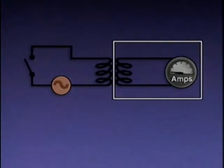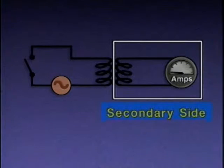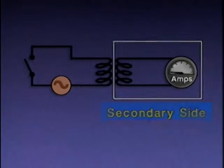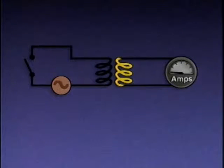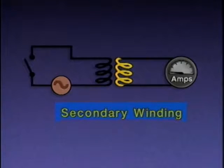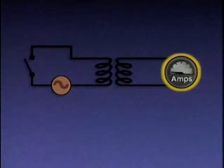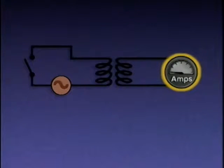The other side of the circuit is called the secondary side. The secondary side components handle power leaving the transformer. In this circuit, the secondary side includes the other coil of the transformer, which is called the secondary winding, and a load, which in this case is an ammeter. The ammeter indicates current flow in amps through the secondary side of the circuit.